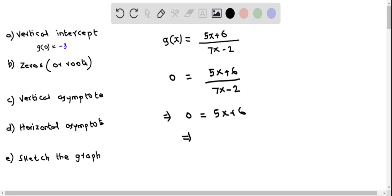We now solve for x from this equation. So first we subtract 6 from both sides and then divide by 5. When you do that, we get x equals negative 6 over 5. So this is the zero of the function g.